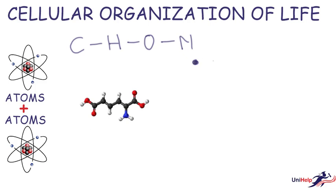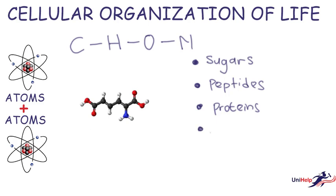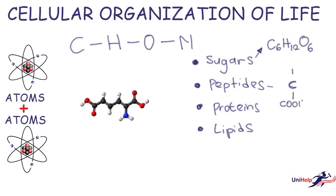These form a major chunk of most of the common biomolecules: the sugars, the peptides, the proteins, and the lipids. Simple sugars are formed from 6 atoms of carbon, 12 atoms of hydrogen, and 6 atoms of oxygen. For the peptides, we have a central carbon connected to two functional groups — the carboxyl group and the amino group — where R is a side chain.